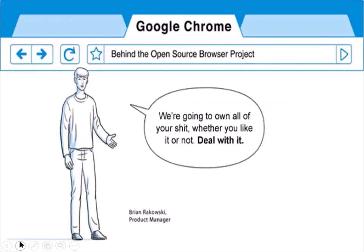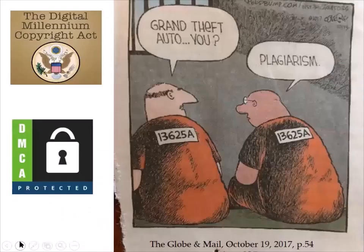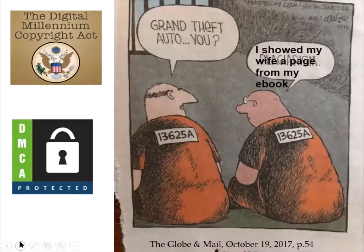They say 'we're going to own all of your stuff whether you like it or not.' Here's an extract from one license: they can come into your home announced or unannounced — 'whether located on the licensee's premises or elsewhere at any time.' You've agreed to that. You could be put in prison not just for plagiarism, but also because you showed your wife a page from your ebook — a criminal offense.